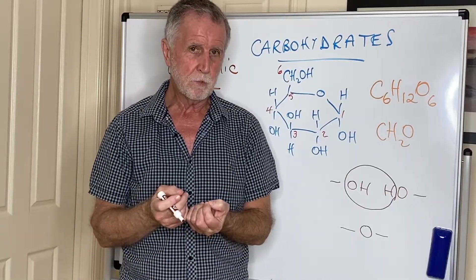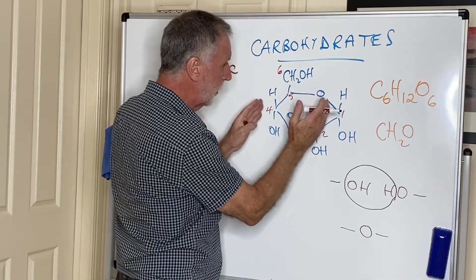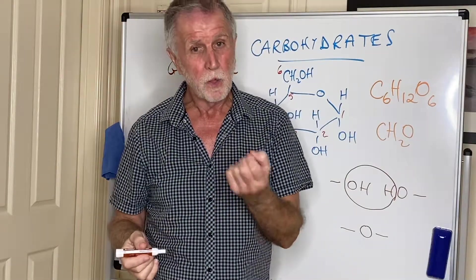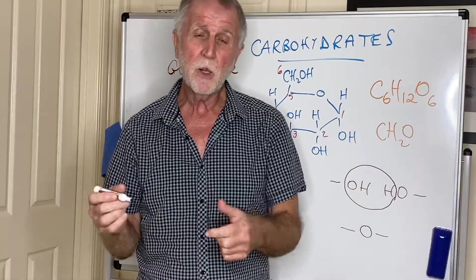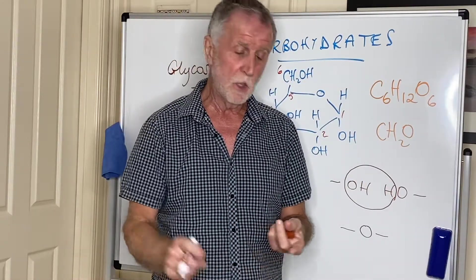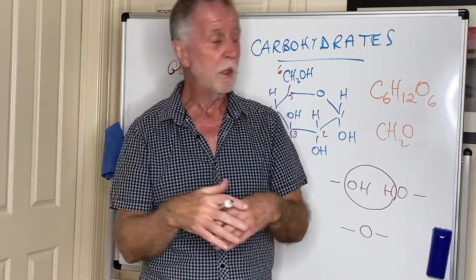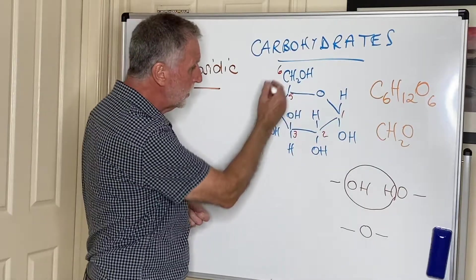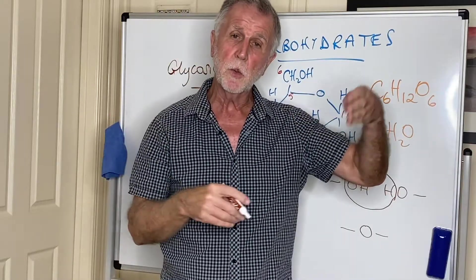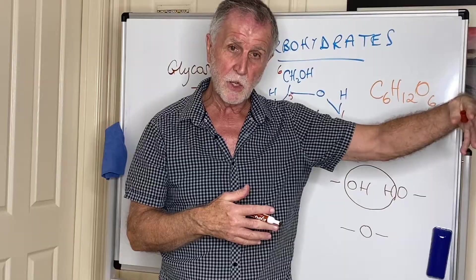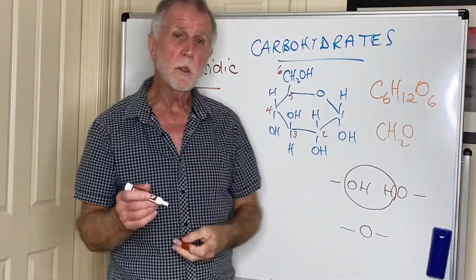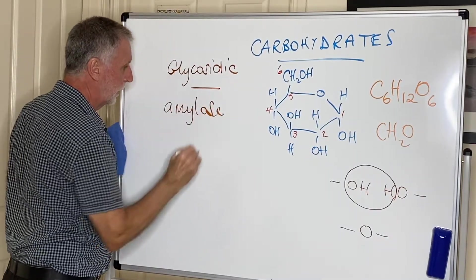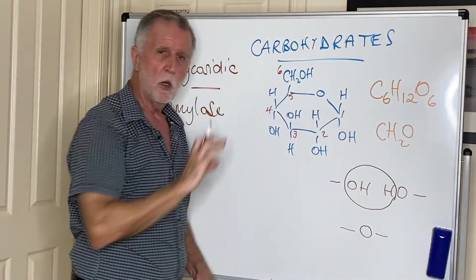So if we now start with the alpha glucose monomer and join it to itself over and over again, what we're doing is basically what plants do when they photosynthesize. So plants obviously make glucose from carbon dioxide and water using chlorophyll and the sunlight energy. So glucose is made by the plant, and then what they do is link the glucose units together to make a polysaccharide, a carbohydrate called amylose. Now amylose is a straight chain of glucose units.